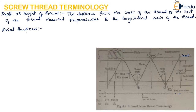Axial thickness is the distance between the opposite faces of the same thread, measured along the pitch line in a direction parallel to the axis of the thread. So the distance between these two opposite faces of the same thread, measured along the pitch line parallel to the longitudinal axis, is the axial thickness.